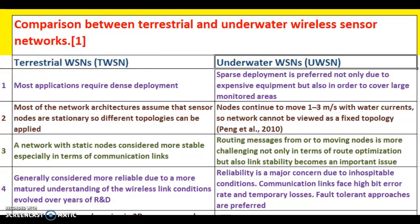Point 2: In TWSN, most network architectures assume that sensor nodes are stationary, so different topologies can be applied. In UWSN, nodes continue to move 1 to 3 meters per second with water currents, so the network cannot be viewed as a fixed topology. Point 3: In TWSN, a network with static nodes is considered more stable, especially in terms of communication links. In UWSN, routing messages from or to moving nodes is more challenging, and link stability becomes an important issue.